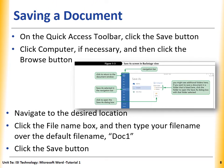Now it's time to save our document. On the Quick Access Toolbar, click the Save button. Click on Computer if necessary, and then click the Browse button. Here we have the Save and Save As options. Navigate to the desired location — for example, the C drive or D drive. Then click the File Name box and type your file name over the default name, Document 1. At the end, click the Save button and our file is saved.